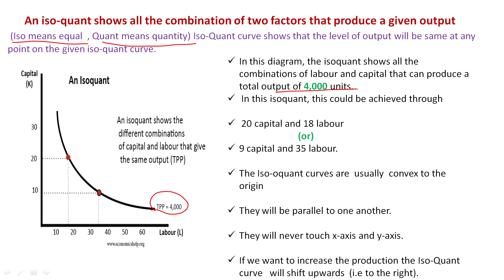For example, 20 units of capital and 18 units of labor, or 9 units of capital and 35 units of labor. In the graph, labor is represented on the x-axis and capital on the y-axis. For 20 units of capital, 18 units of labor is employed. Similarly, for 9 units of capital, 35 units of labor is employed — so as to arrive at 4,000 units of total output.